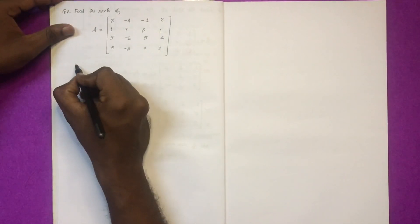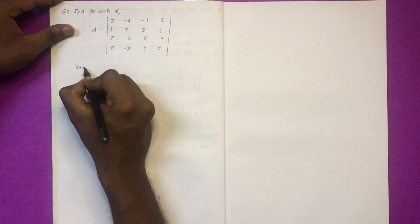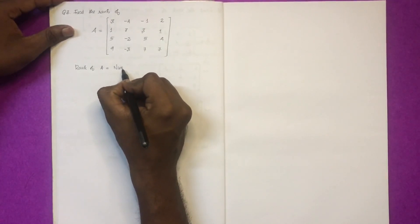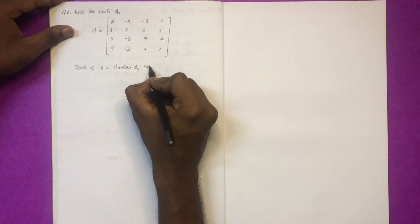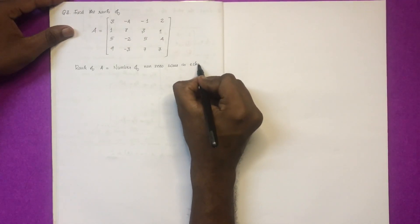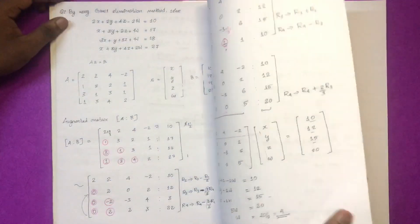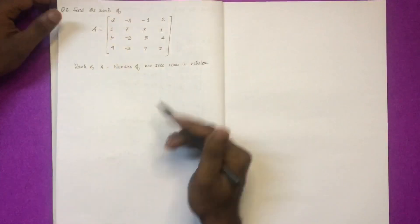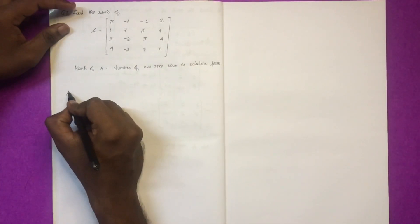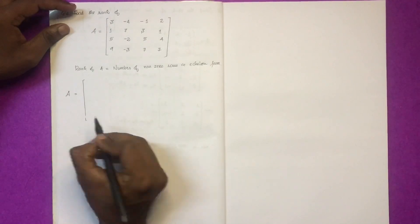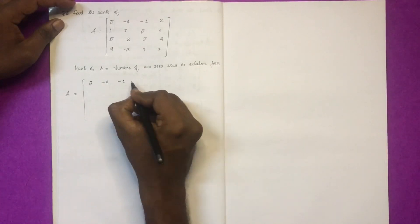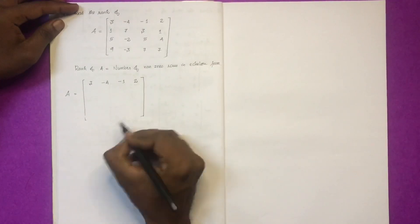Welcome. The rank of A is equal to the number of non-zero rows in its echelon form. Echelon form.